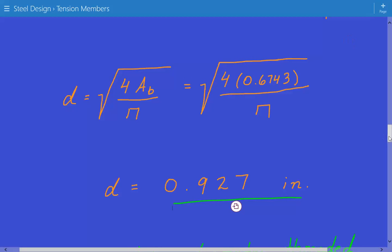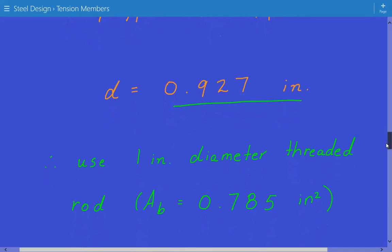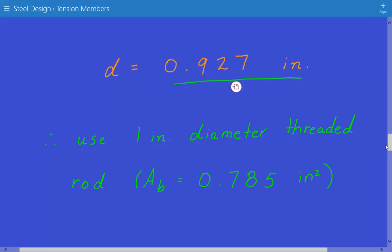We find that the required diameter is equal to 0.927 inches. So for design purposes, we'll use a 1-inch diameter threaded rod, and our cross-sectional area is equal to 0.785 inches squared.